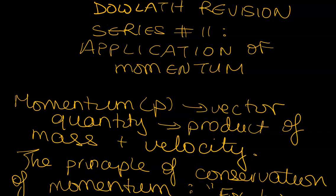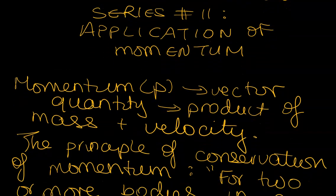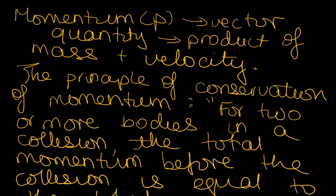Momentum is normally touched on in form 3 and in form 4 as we get towards finishing up CSEC, we look at the application of the principle of conservation of momentum. Now momentum is symbolized by common P, it is a vector quantity and it is defined as the product of mass and velocity.